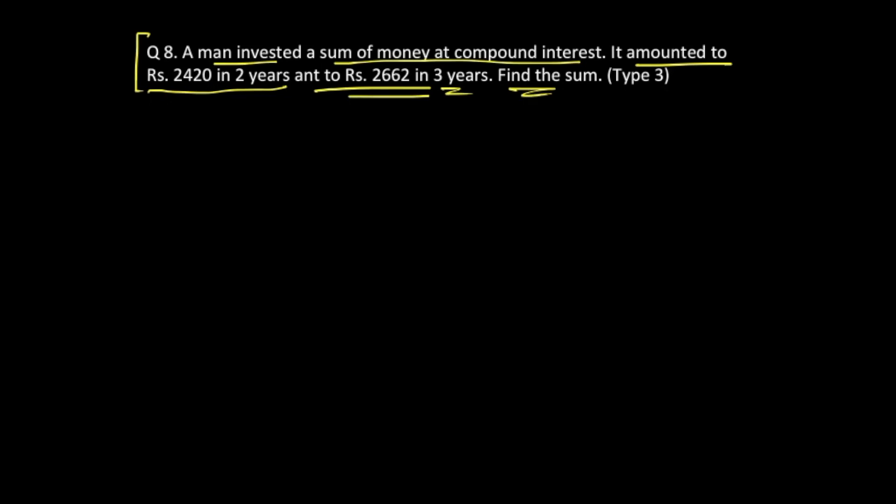Find the sum. This is similar to what we had done in the previous question. So compound interest for the first two years is this much, and then for the three years it is going to be 2662.